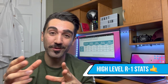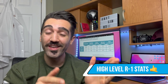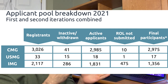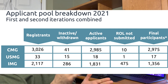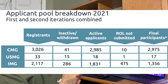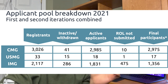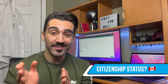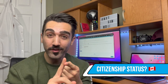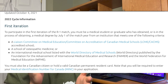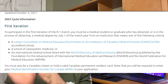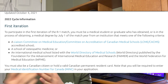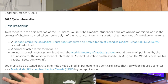High-level R1 CARMS application data: as of 2021, there were just over 4,000 applicants — 2,975 Canadian medical graduates, 17 American medical graduates, and 1,356 international medical graduates who completed the CARMS application. When you apply for residency here in Canada, the first thing you need is a Canadian medical identification number. You'll need to sign up for a Physicians Apply account on their official website — that's the Canadian Medical Association's platform for handling the matching process.